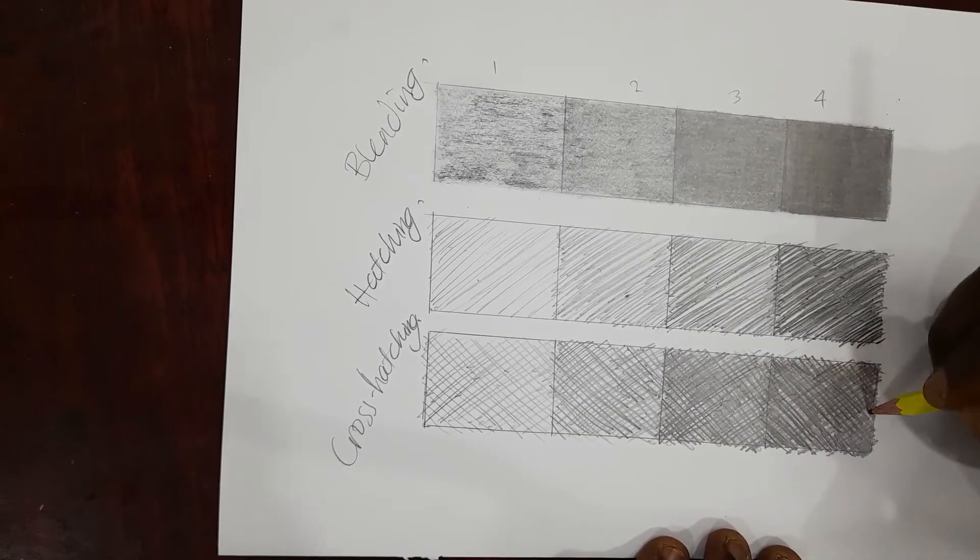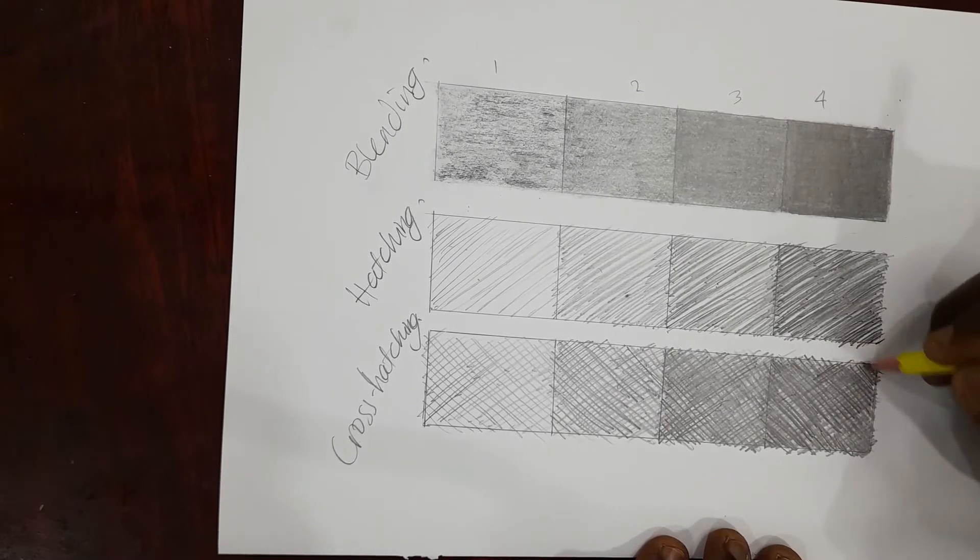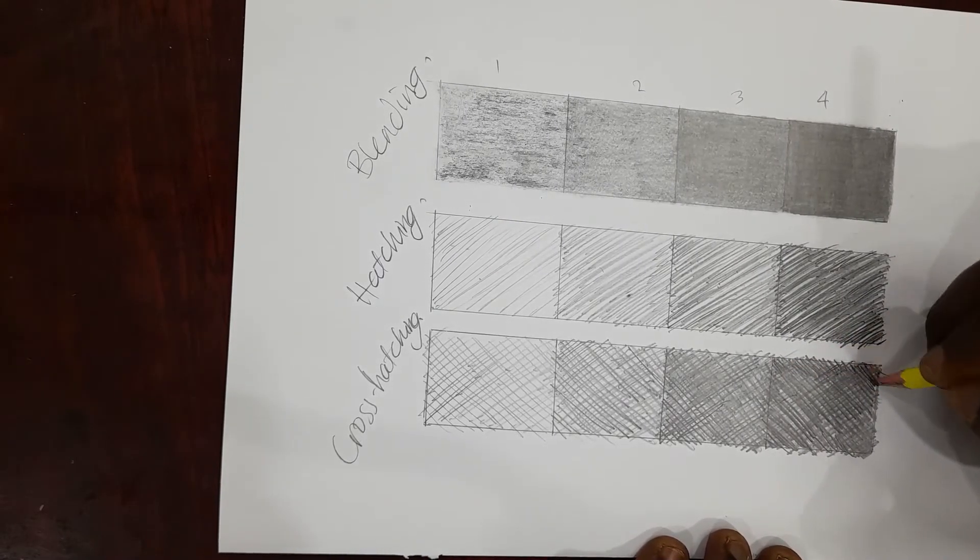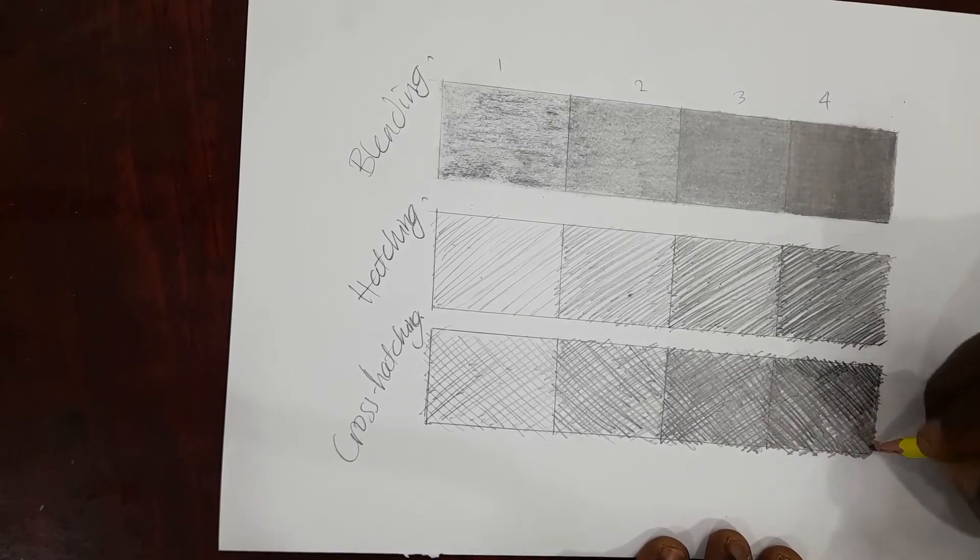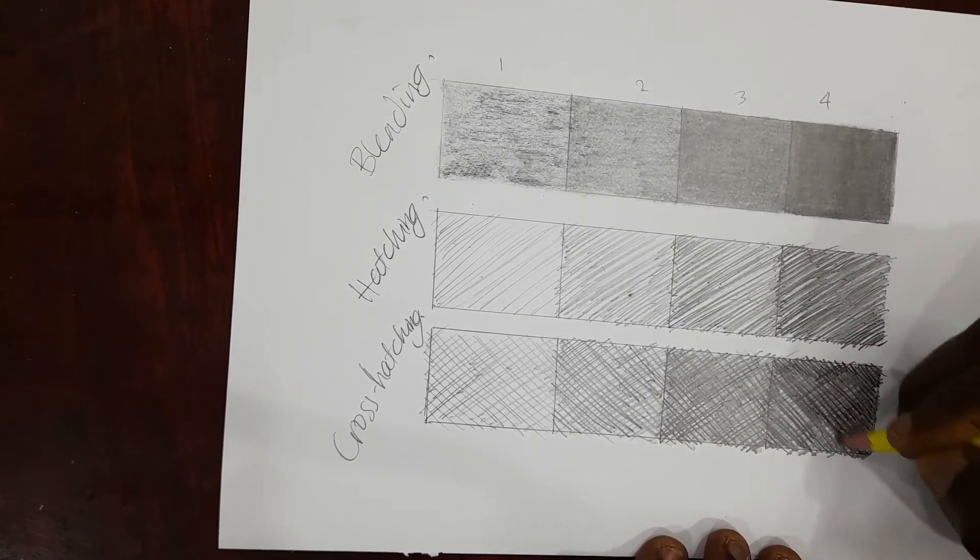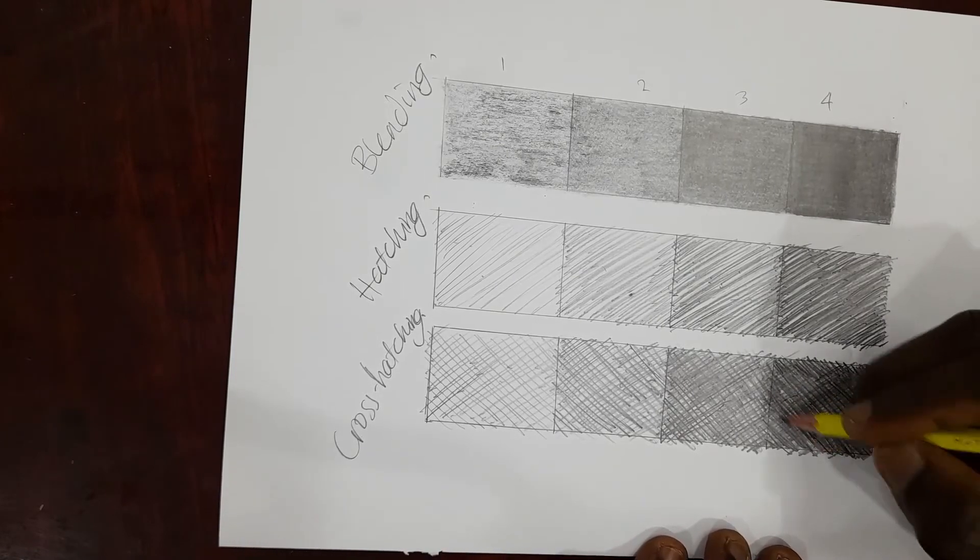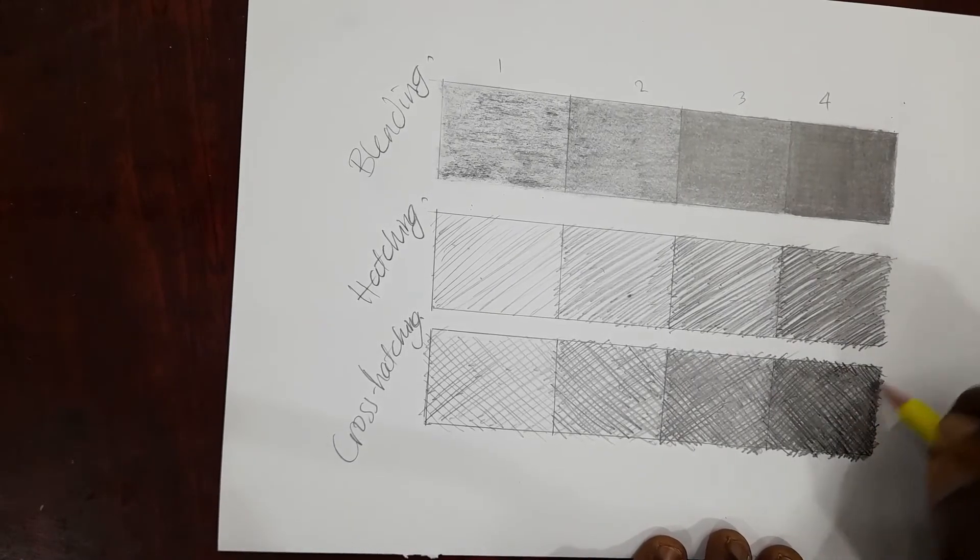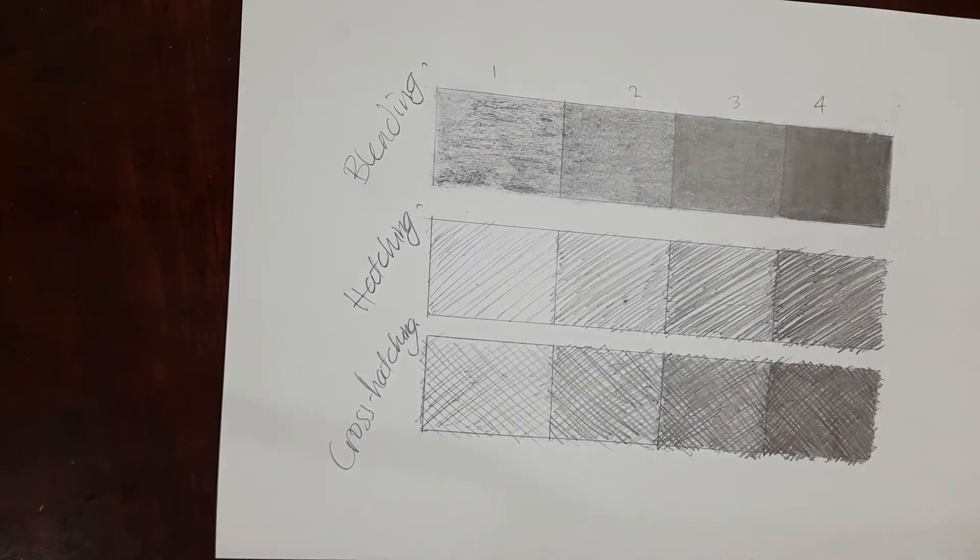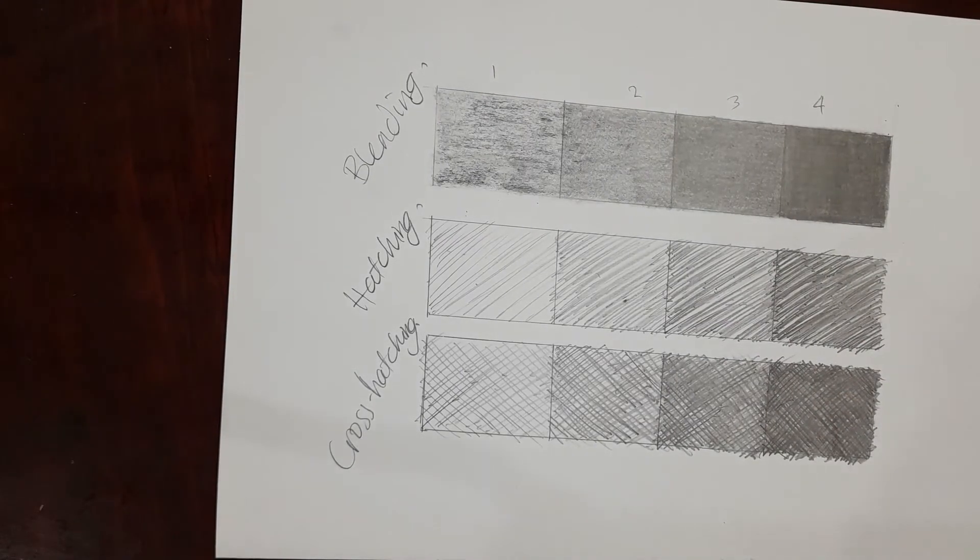I'm applying a little more pressure on the pencil so as to get it darker, and of course I'm adding more lines than the previous boxes. You need your pencil to be well sharpened. So we have the blending technique, the hatching technique, and the cross-hatching technique.